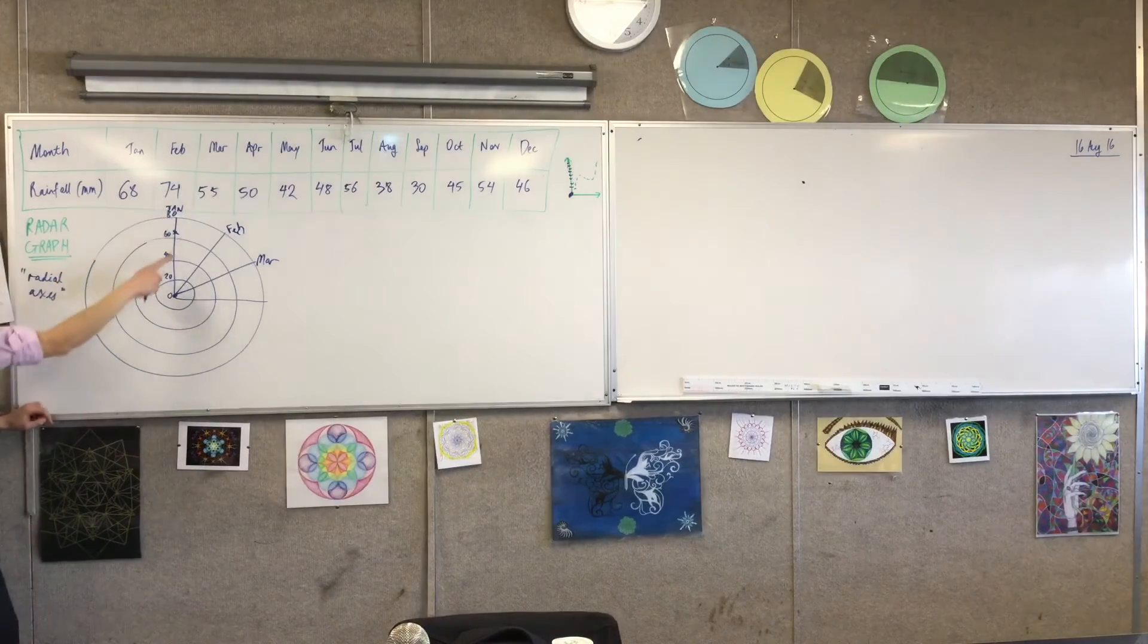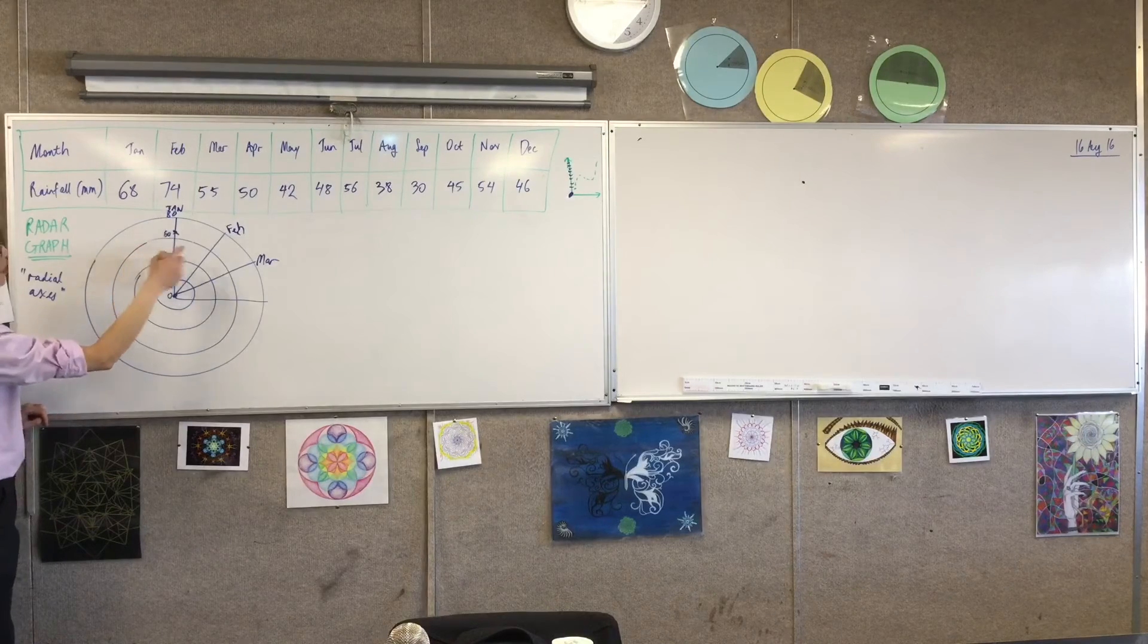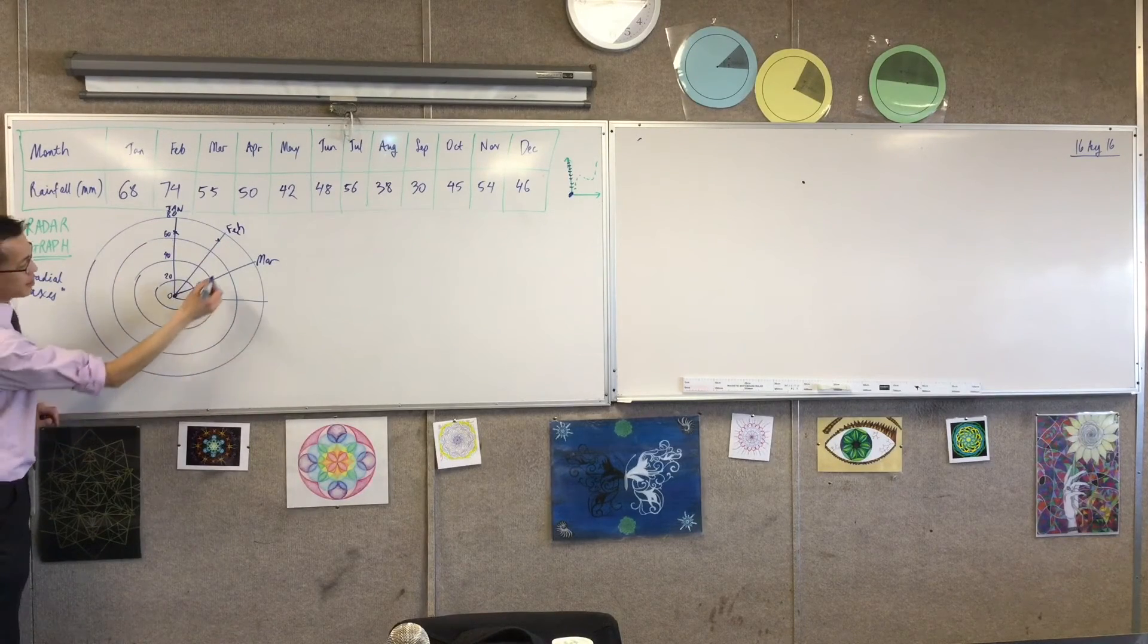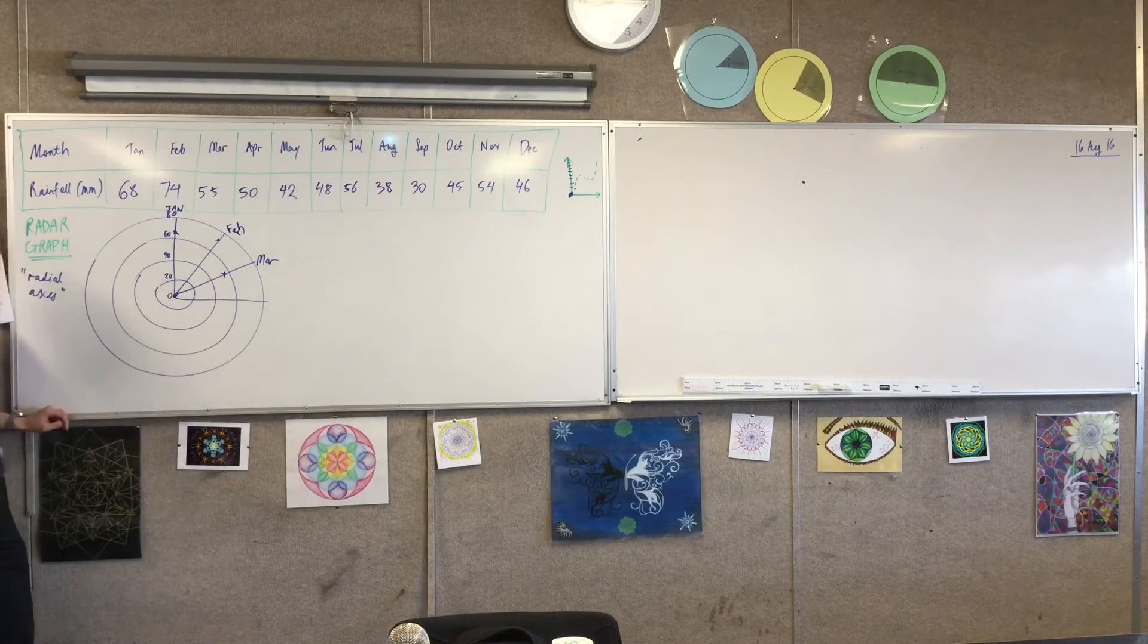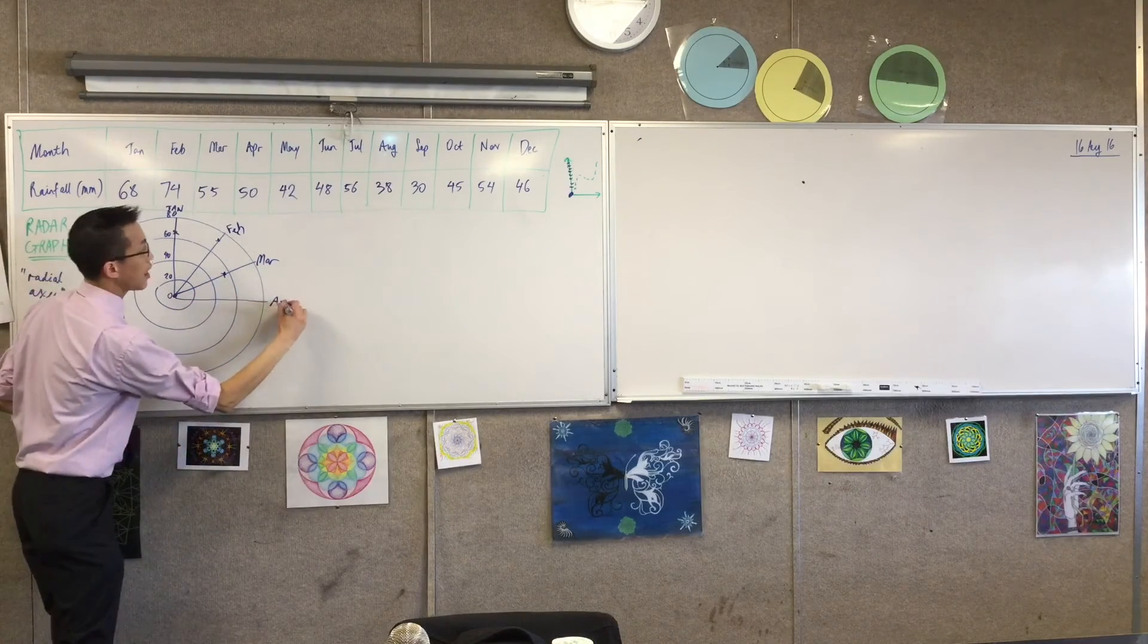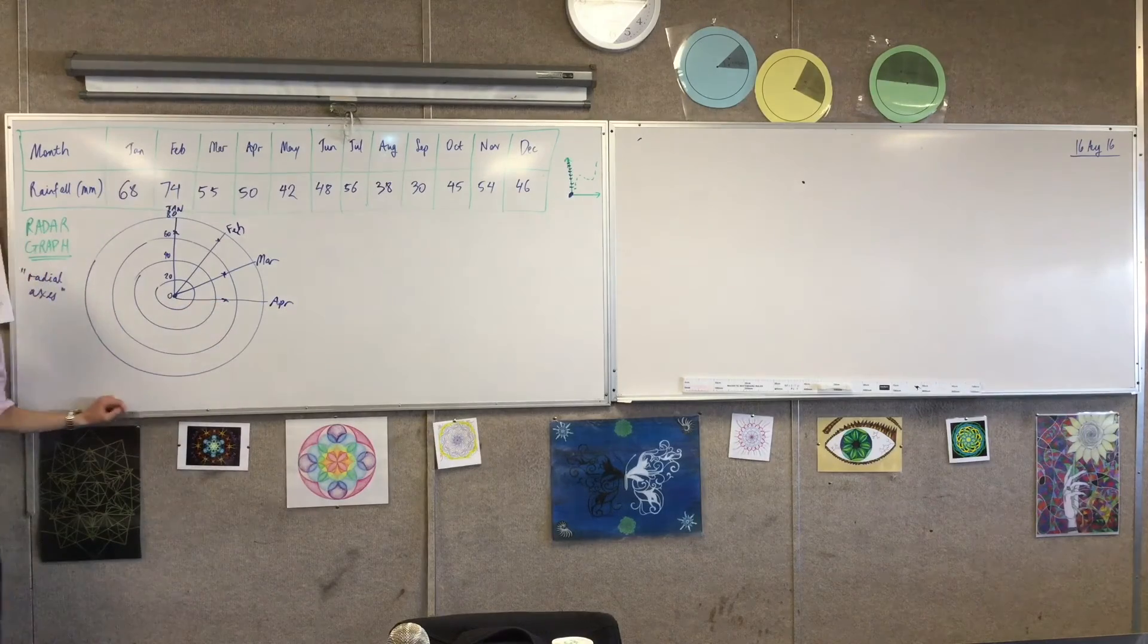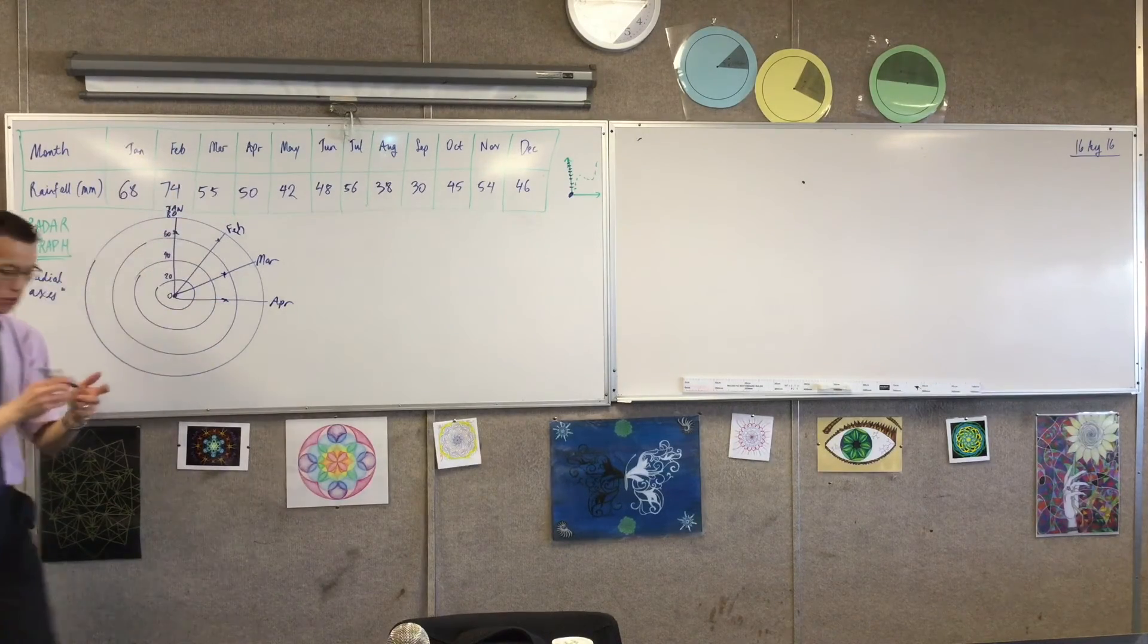In the same way, I'm going to keep on measuring. So let's see, 74, that's going to be a bit above halfway. 55, where's that going to be? There's 50 there, so 55, something like that. The last one I've drawn is April. What have we got? 50, bang on. So that's halfway. Okay, so you can see I'm going to have to complete this all the way around.